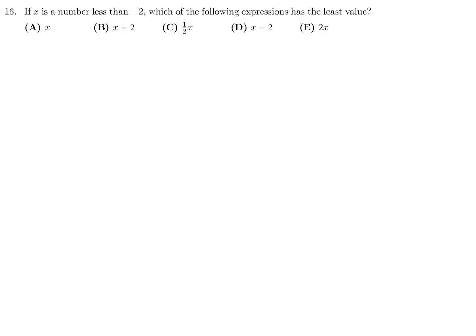If X is a number less than negative 2, which expression has the least value? As always, just choose a number less than negative 2 — let's choose negative 4. Evaluating each option gives: negative 4, negative 2, negative 2, negative 6, and negative 8. The least value is clearly negative 8. Number 16, the answer is E.